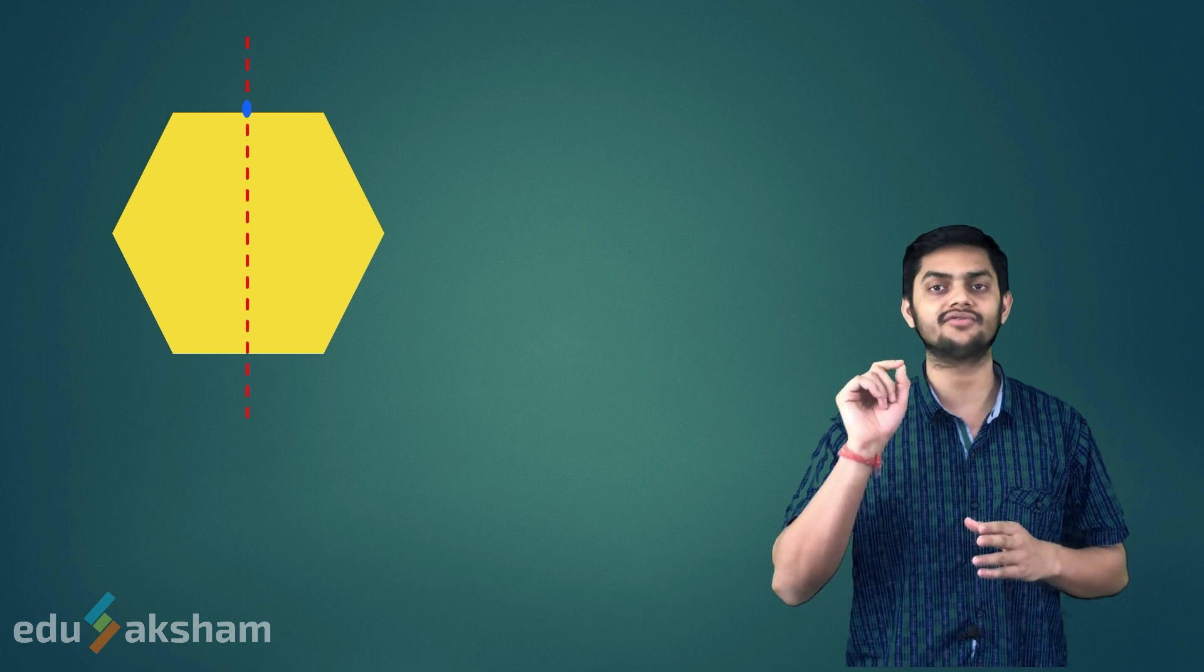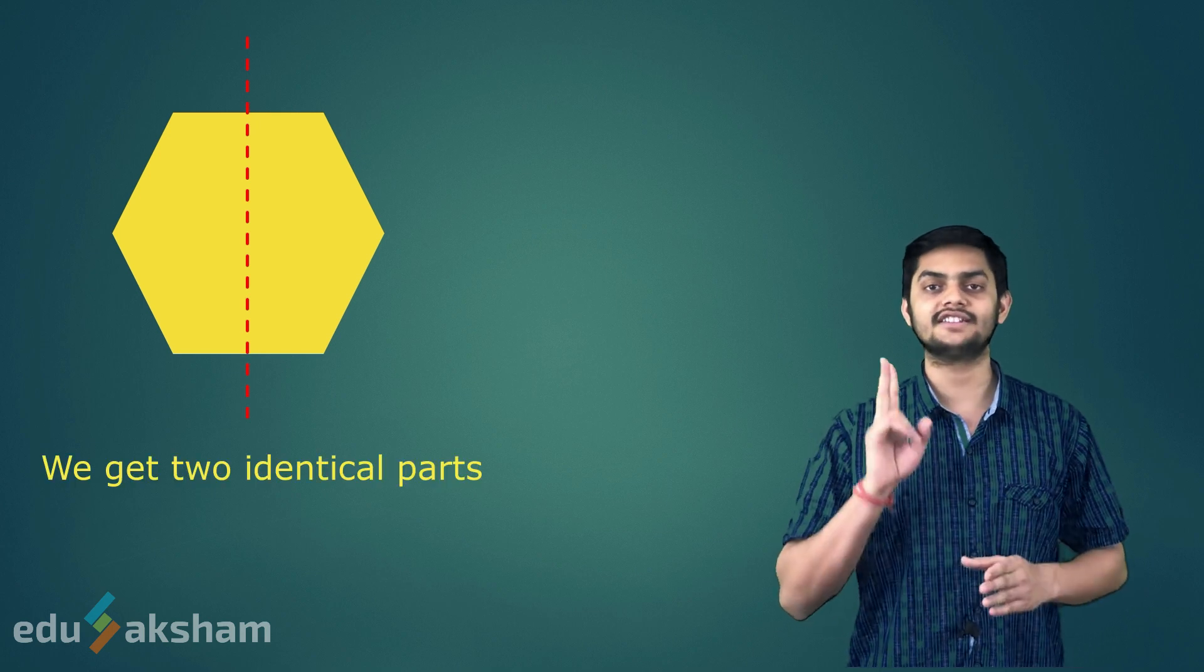That is hexagon. Notice hexagon carefully. If we draw a vertical line from the midpoint of the top edge passing through the midpoint of the bottom edge, then we will get two parts that are exactly similar.